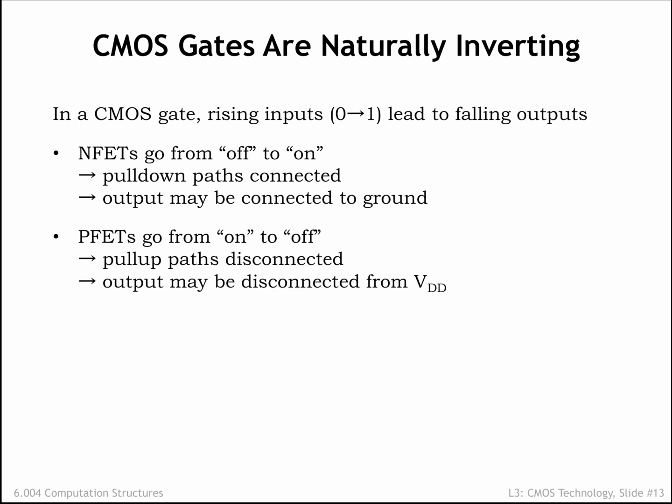PFET switches controlled by the rising input will go from ON to OFF, which may disable one or more paths between the gate's output and VDD. So if the gate's output changes as a result of the rising input, it must be because some pull-down path was enabled and some pull-up path was disabled — in other words, any change in the output voltage due to a rising input must be a falling transition from 1 to 0.